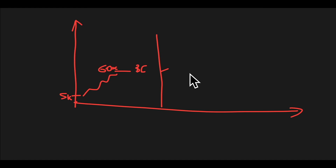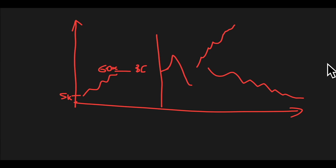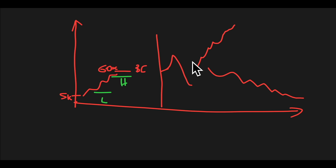Once a coin gets real liquidity, it can do a few different things: it can go up and then dump; it can go straight up to 1 million or 2 million; or it can go up, dump, and die off completely. As traders, all we're doing is buying low and selling high. We can do that before or after it reaches the bonding curve. Before the bonding curve there's a ceiling on how high it can go — after the bonding curve, there's no ceiling.